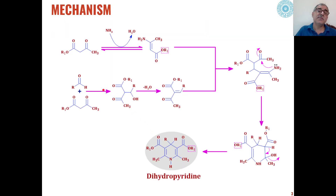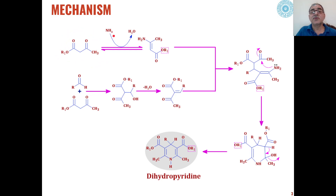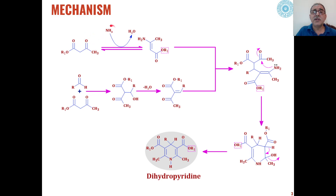As far as the mechanism of this reaction is concerned, in the first step the beta-ketoesters react with the nitrogen source. For example, if we are using ammonia, this ammonia will react with the beta-ketoester. The carbonyl group interacts with ammonia with elimination of water — H from one side and O from the other — leading to the formation of enamine esters.